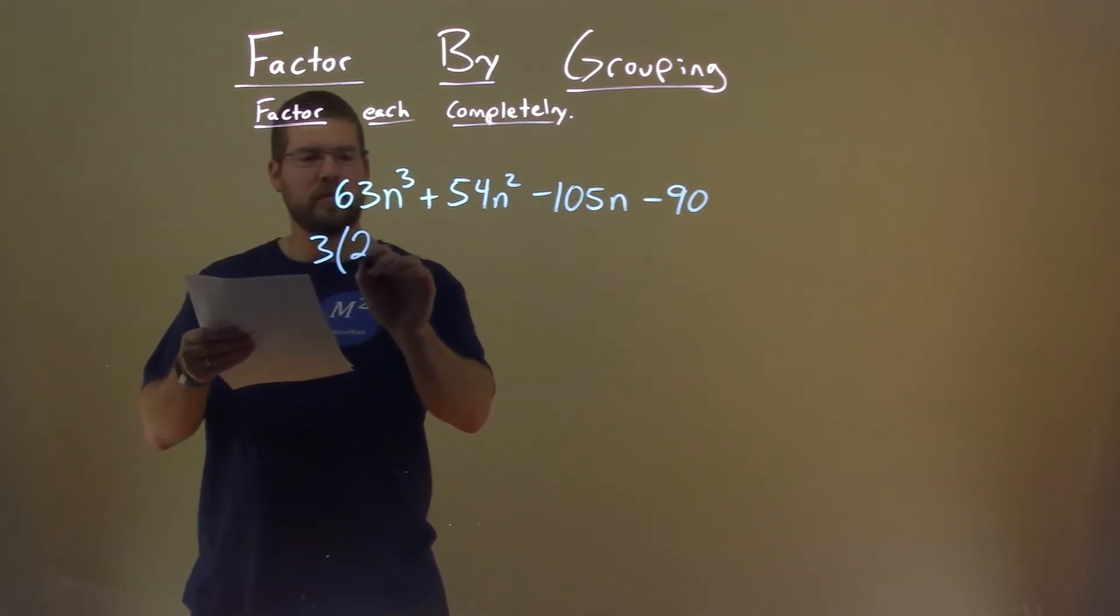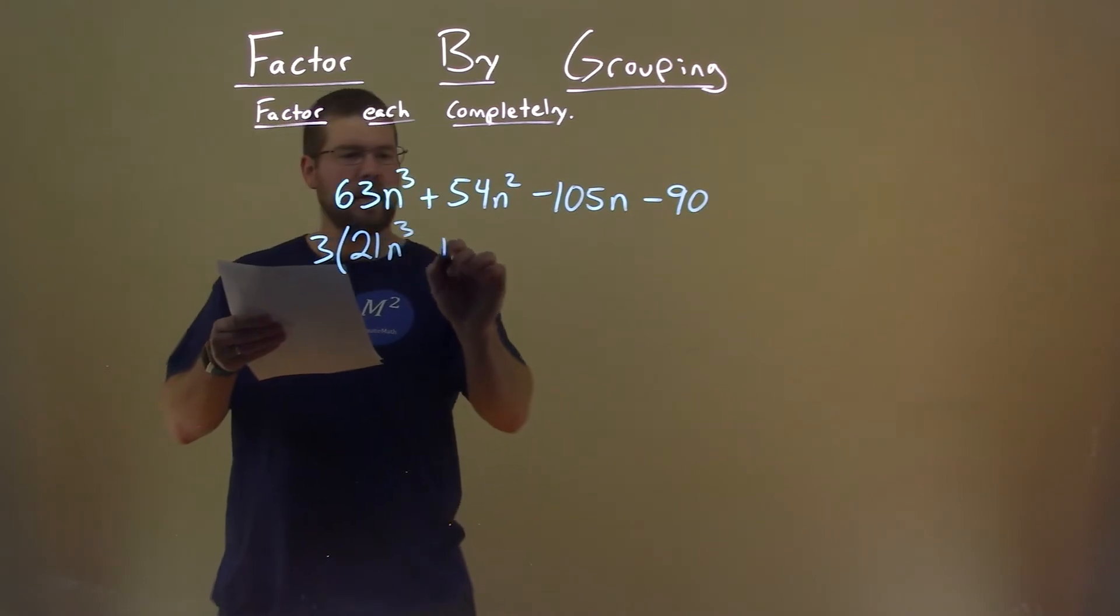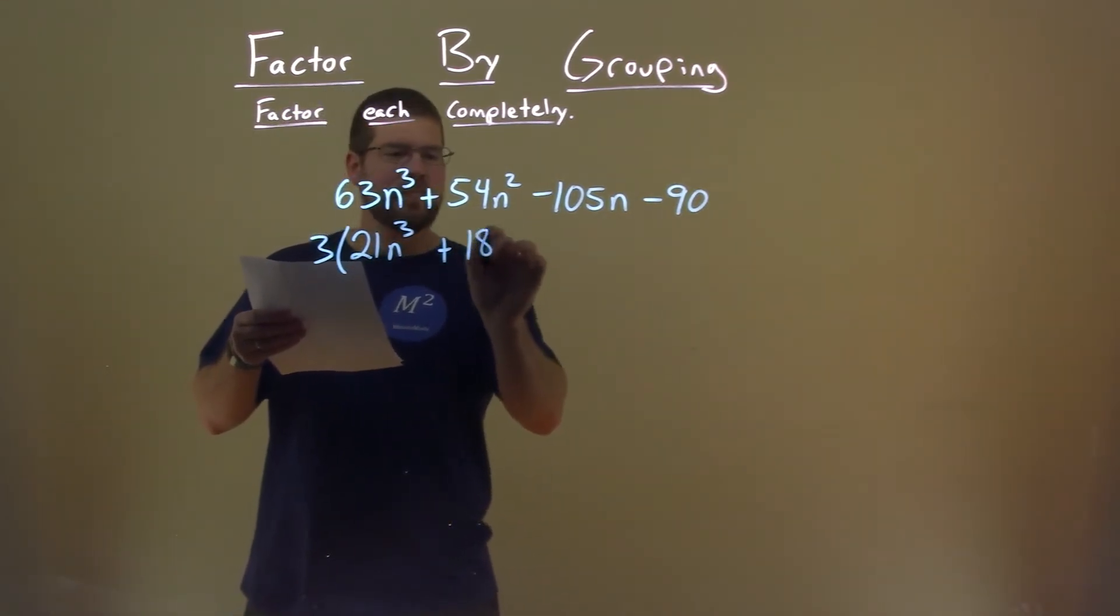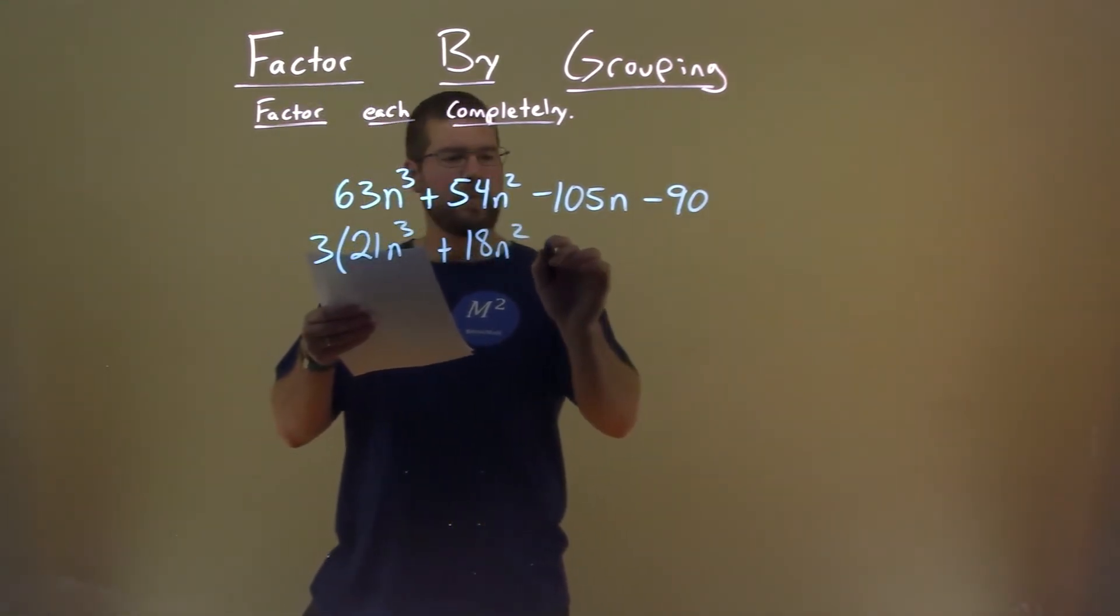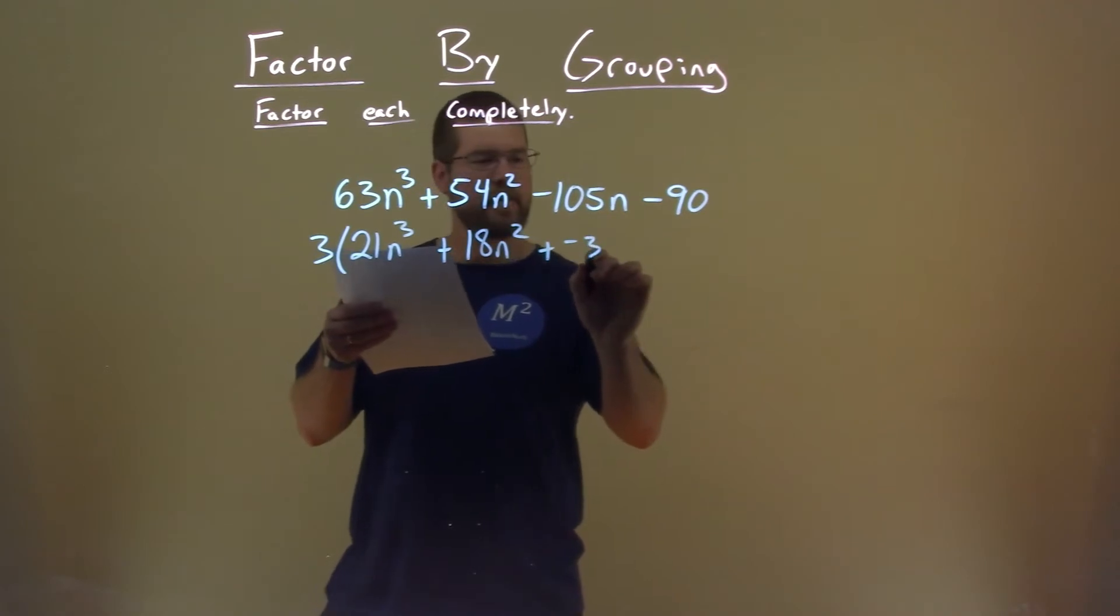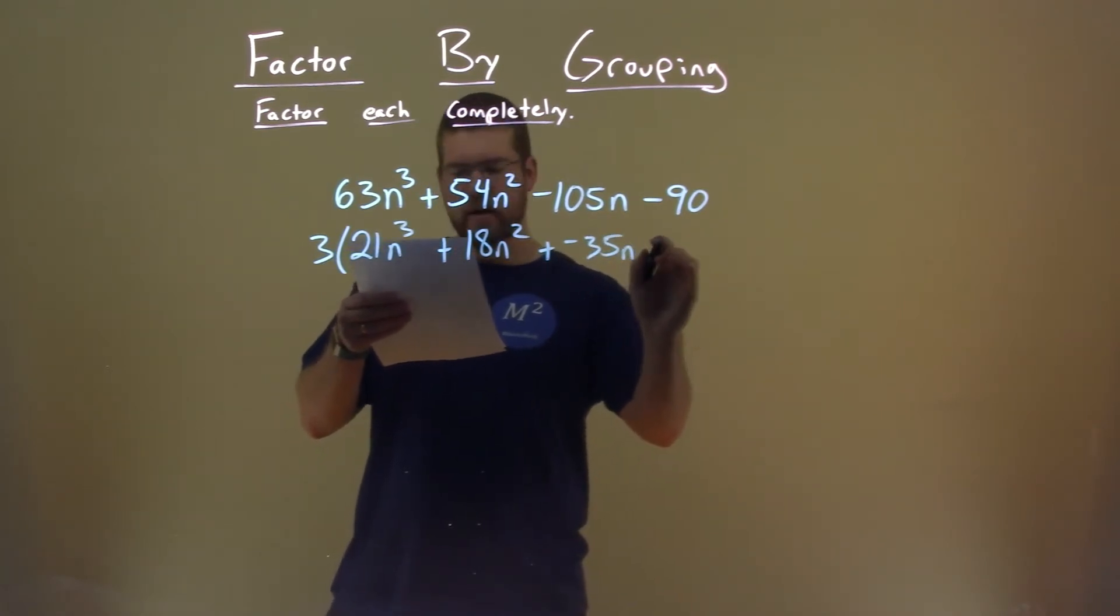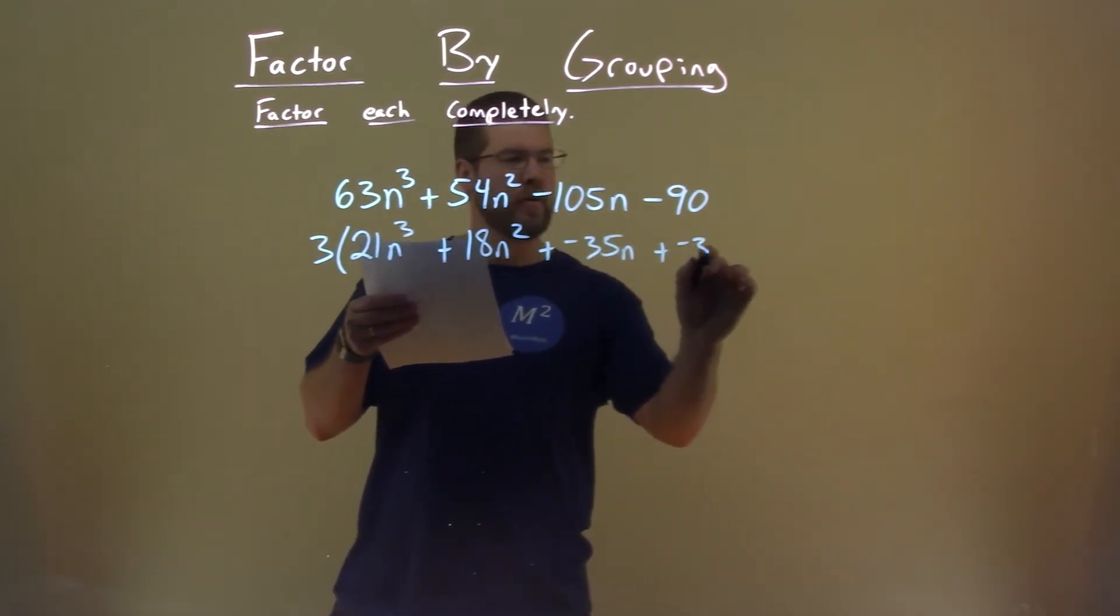3 goes into 63 21 times, 21n to the third power, plus here we have 18n squared plus a negative, 35n, and then plus a negative 30.